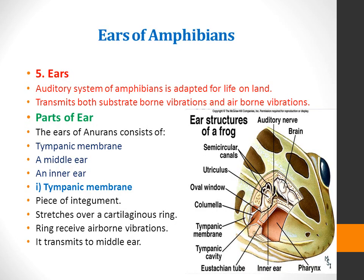Now we will discuss the ears of amphibians, particularly those of frogs and toads, i.e. anurans. The frog does not have an external ear comparable to that of most other terrestrial vertebrates — there is no pinna and the vast majority of known species lack an ear canal. The auditory system of amphibians is adapted for life on land and transmits both substrate-borne vibrations and airborne vibrations.